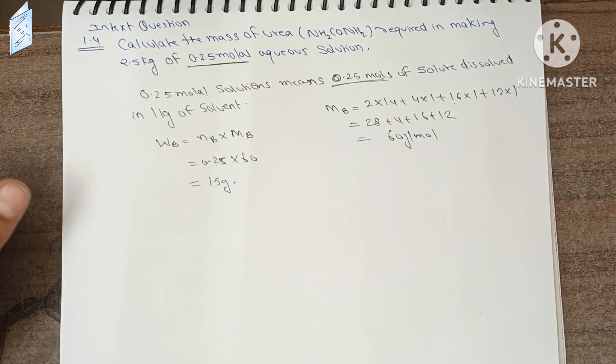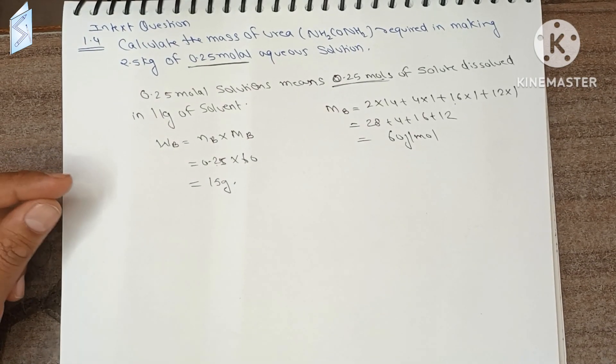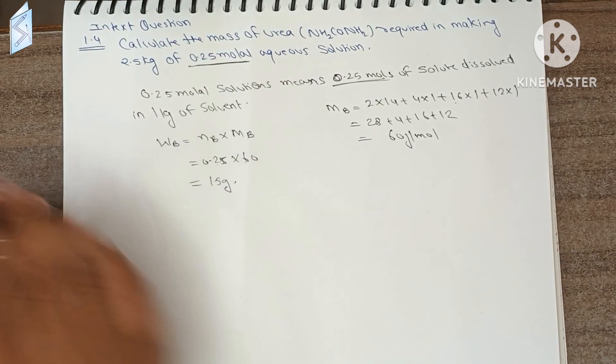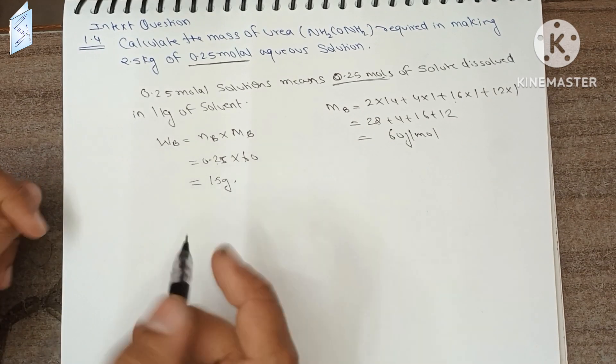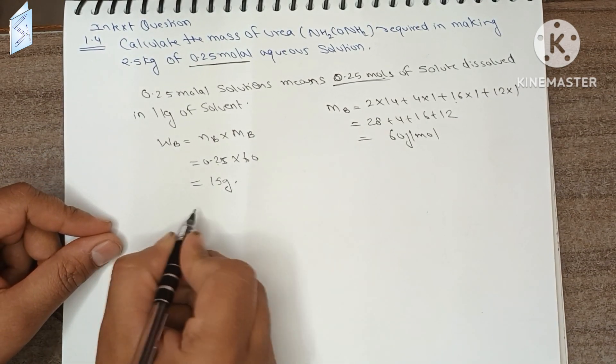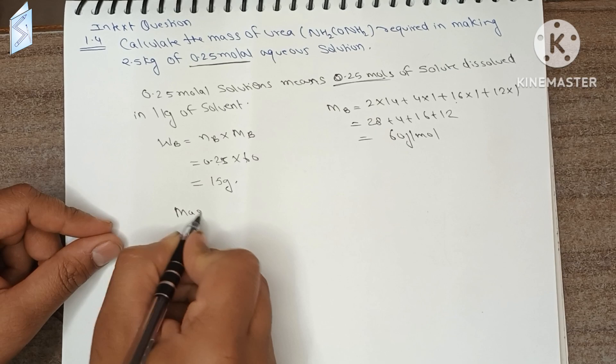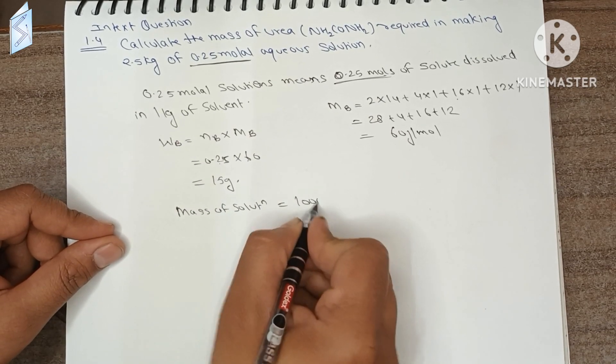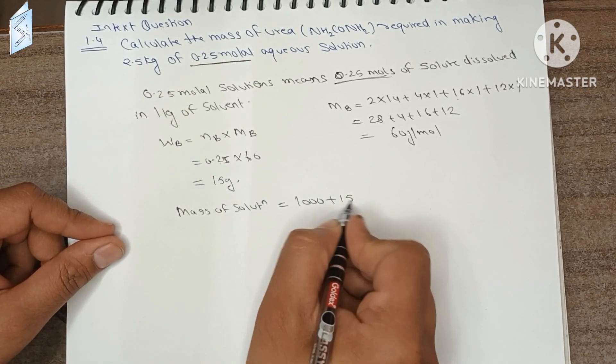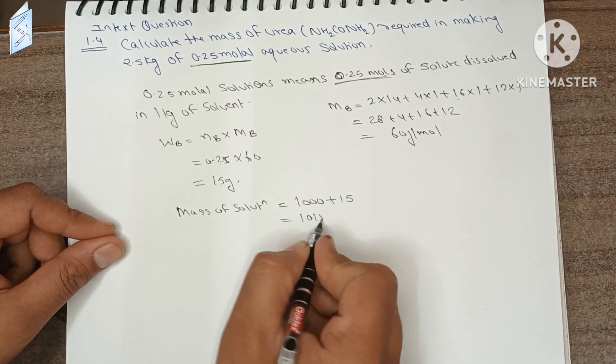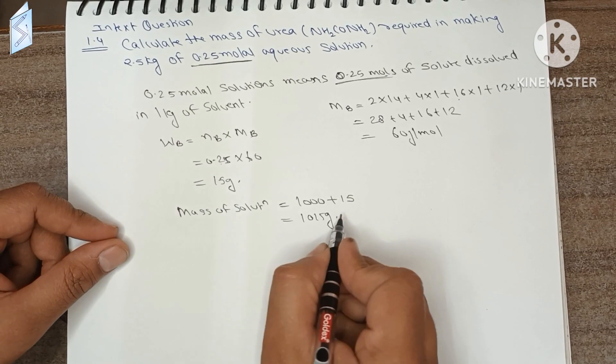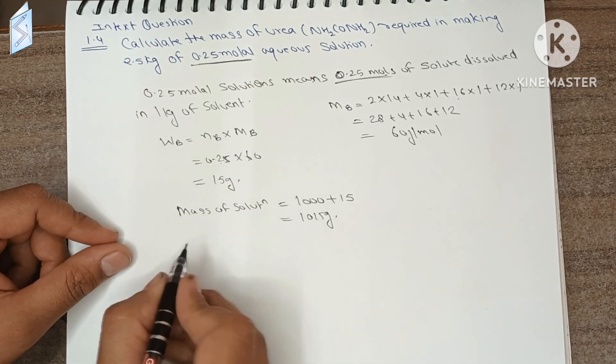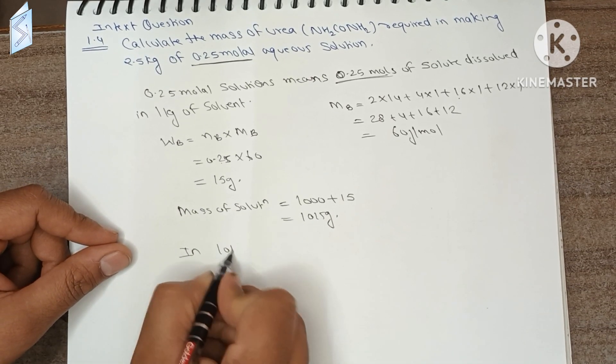Our urea will be 0.25 molal aqueous solution. So if we talk about mass of solution, how much will it be? That will be 1000 gram solvent plus 15 gram urea, which means 1015 gram. So we have a mass of solution. We will write: in 1015 gram of solution, mass of urea present is 15 gram.